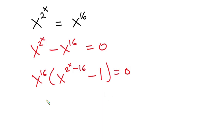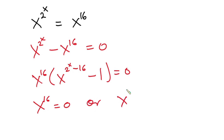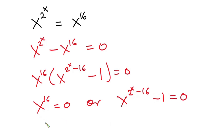From here we can say that x to the power 16 is equal to zero, or x to the power (2 to the power x minus 16) minus 1 is equal to zero. Taking the 16th root, we have x equals zero.